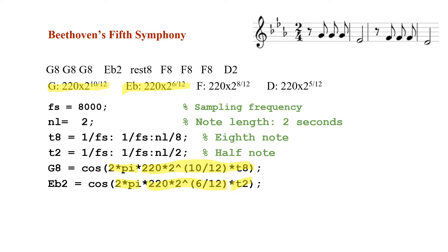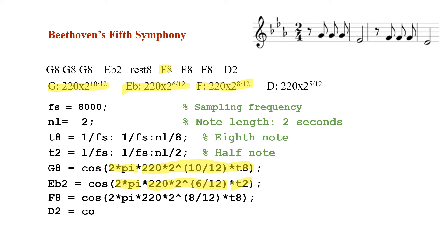F8 is the cosine of 2*pi * 220 * 2^(8/12) * T8, because F is played for one eighth of the note length. D2 is the cosine of 2*pi * 220 * 2^(5/12) * T2, because we want half of the note length. So now we've defined all the signals needed to play each note for the specified amount of time.